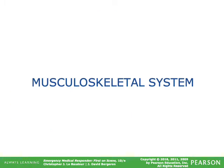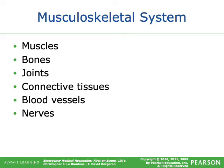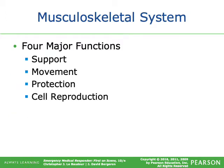The musculoskeletal system includes the muscles, bones, joints, connective tissues, blood vessels, and nerves. There are four major functions: support — supporting the entire body — movement, protection, and cell reproduction.